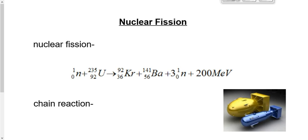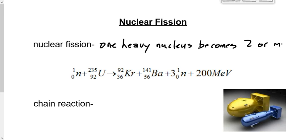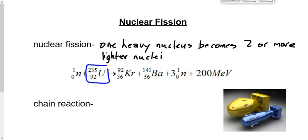Nuclear fission is the dividing of a nucleus. Nuclear fission is when one heavy nucleus becomes two or more lighter nuclei. Looking at this equation — one neutron plus uranium-235 goes to krypton-92 and barium-141 — on the left-hand side we have uranium-235, one heavy nucleus, and on the right-hand side we have krypton-92 and barium-141. One heavy nucleus becomes two lighter nuclei.